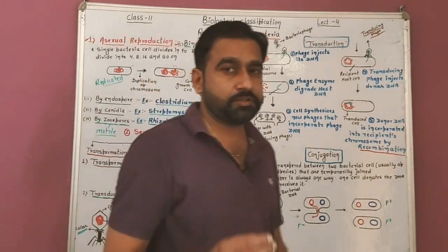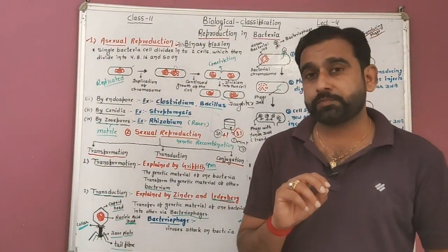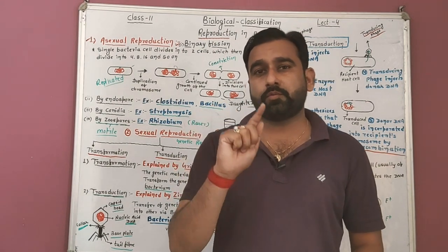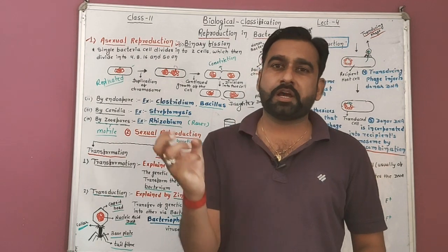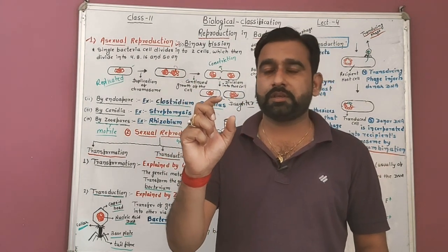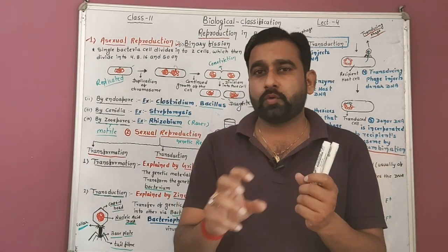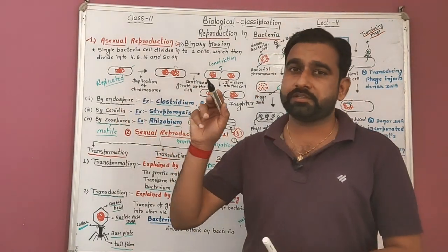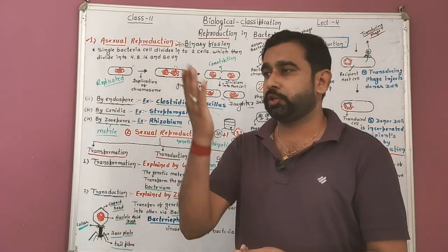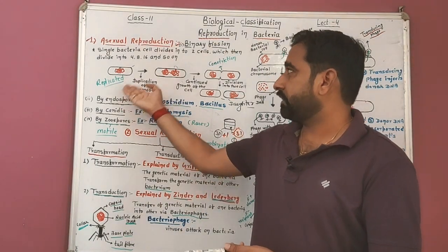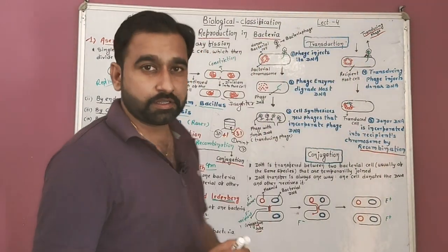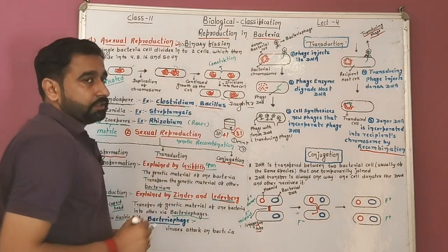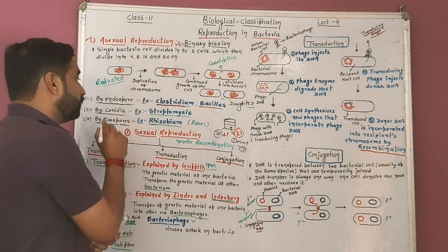Asexual reproduction in bacteria by endospore: endospores are formed under unfavorable conditions. When conditions are not favorable, the chromosome or nucleoid of the bacterial cell forms a membrane around itself. The cytoplasm condenses and surrounds the nucleoid, forming a solid structure called an endospore. When conditions become favorable again, this layer breaks and the bacterium resumes binary fission. Examples: endospore formation occurs in Clostridium and Bacillus bacteria.